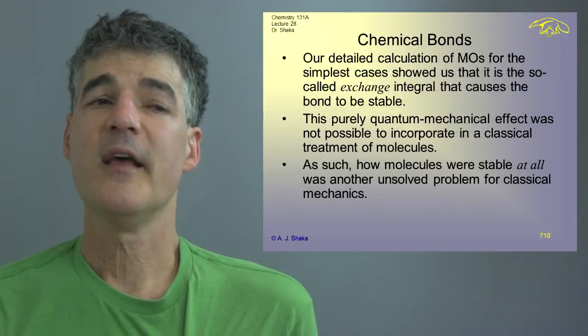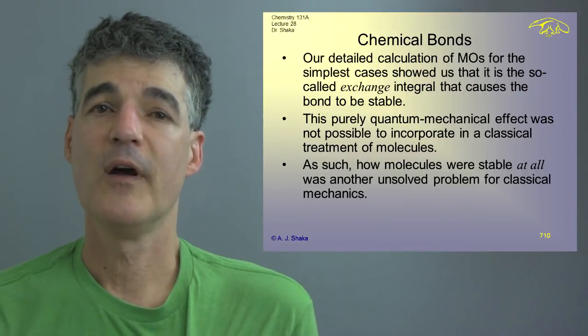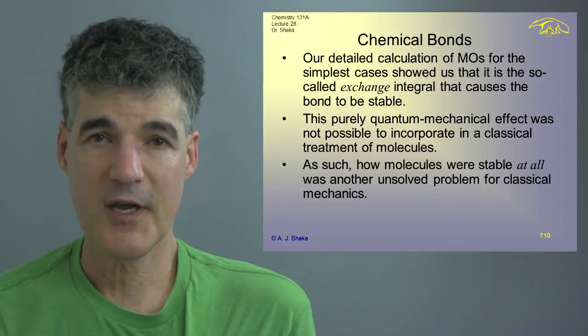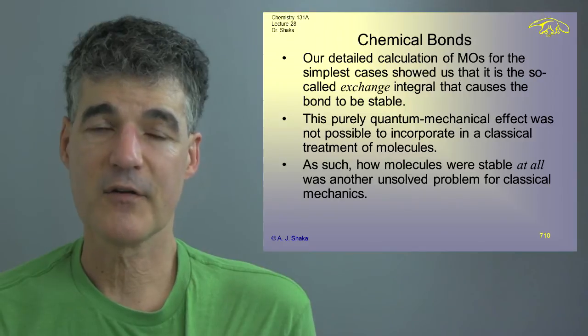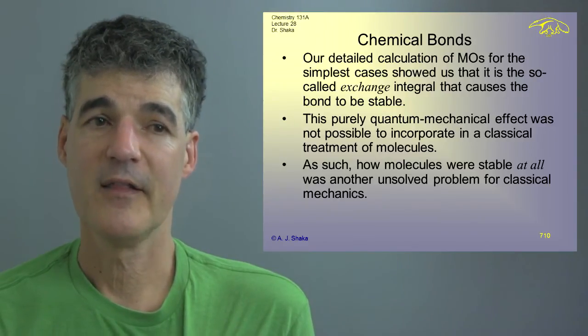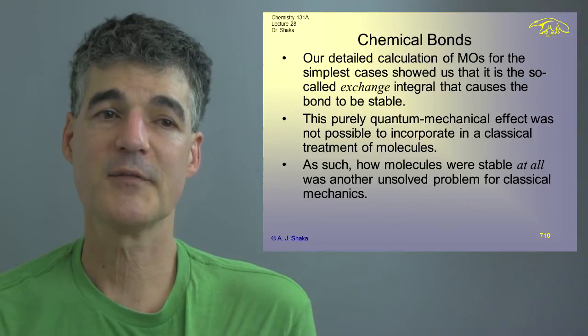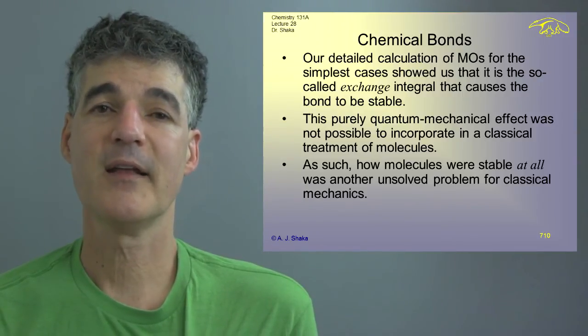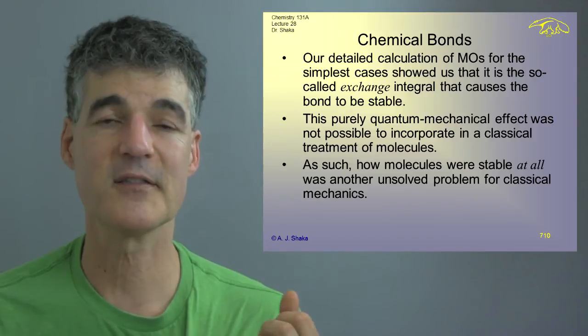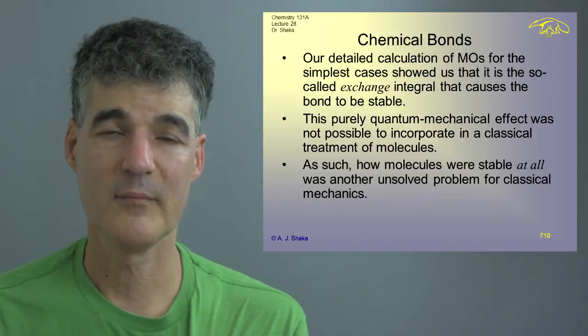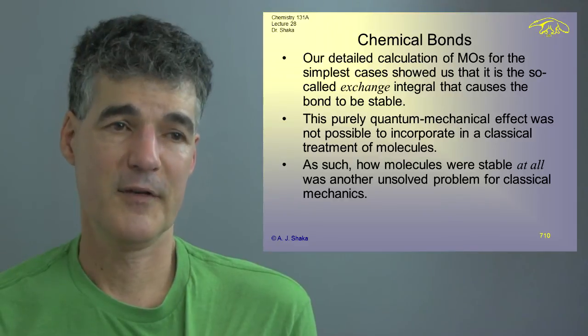And we did a detailed calculation of the molecular orbitals for simple cases. And what we found out when we did that is that the so-called exchange integral was the one that causes the bond to be stable. And that exchange integral was basically purely a quantum mechanical effect that was not possible, would not be seen in classical mechanics. And that in turn explains how quantum mechanics naturally produces, predicts that things like H2 and H2O and things like that are going to exist and be more stable than the uncombined atoms. But in classical mechanics, this was just another conundrum to figure out.